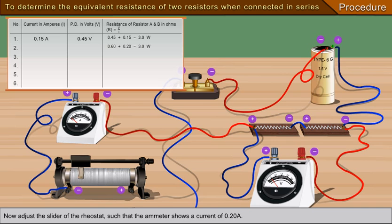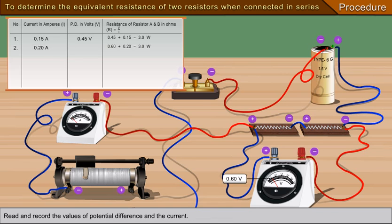Now adjust the slider of the rheostat such that the ammeter shows a current of 0.20 ampere. Read and record the values of potential difference and the current.